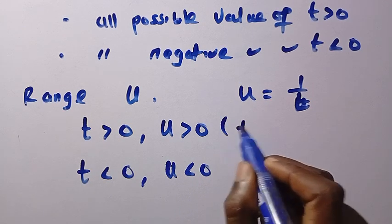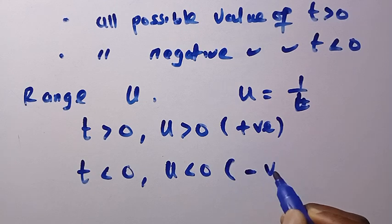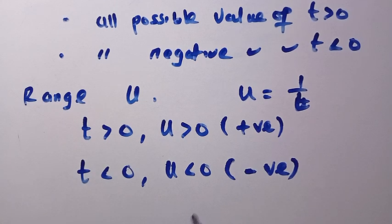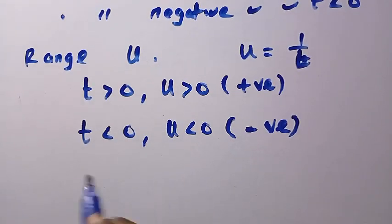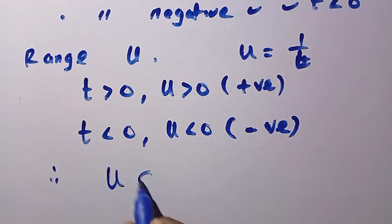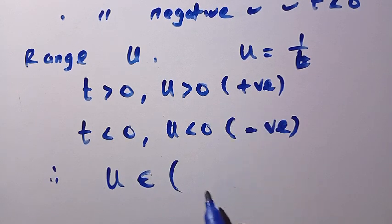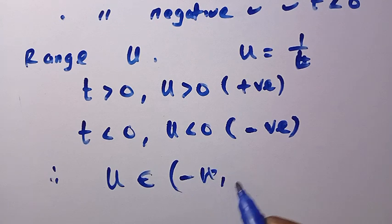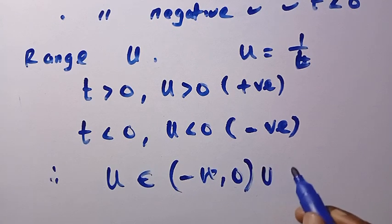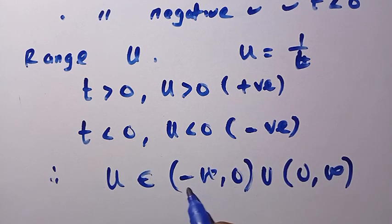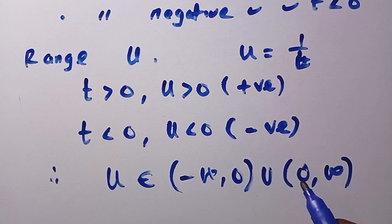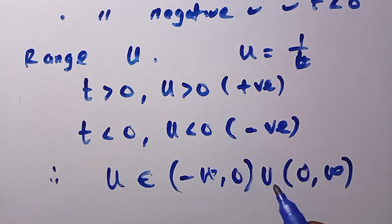So positive t gives positive u, and negative t gives negative u. We conclude that u is a member of negative infinity to 0, union 0 to positive infinity. Negative infinity is not part of the range, 0 is not part of the range, and positive infinity is not part of the range — any other value satisfies this.